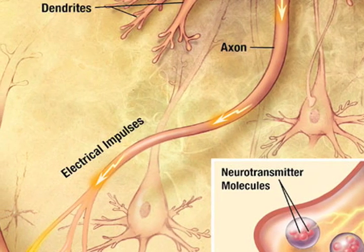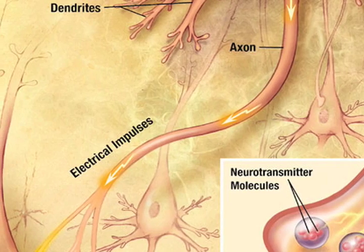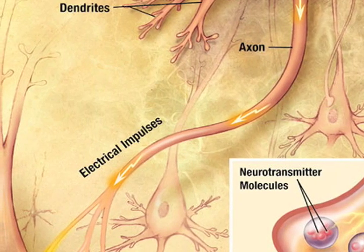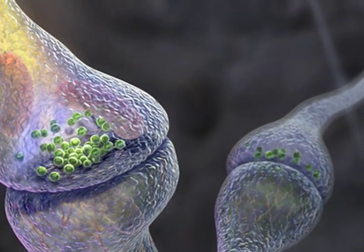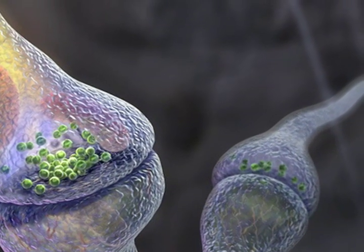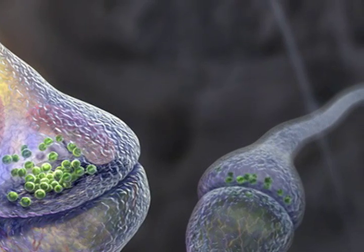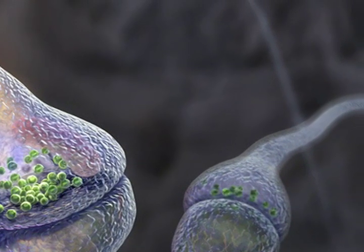Around the cell body is a branching dendritic tree that receives signals from other neurons. The axon is a finer cable-like projection which can extend tens, hundreds, or even tens of thousands of times the diameter of the soma in length.